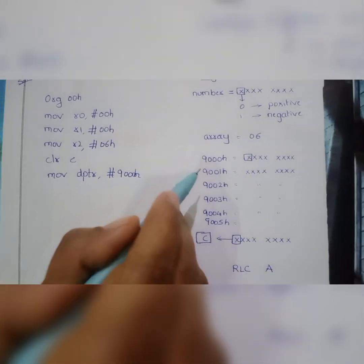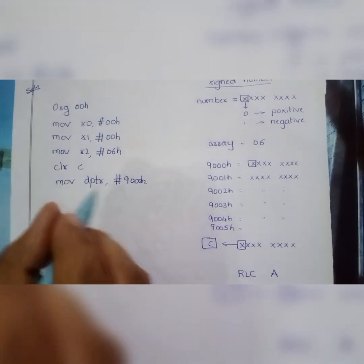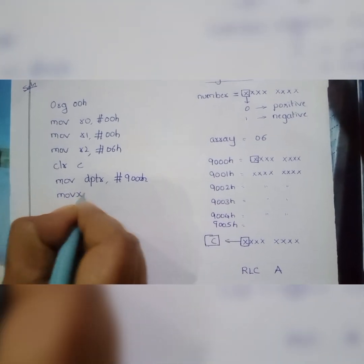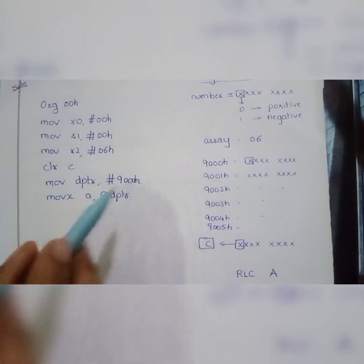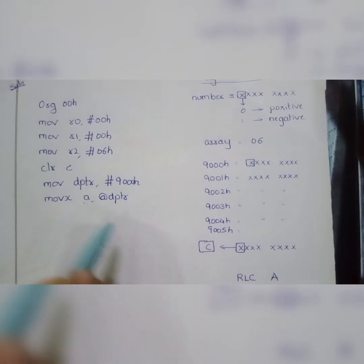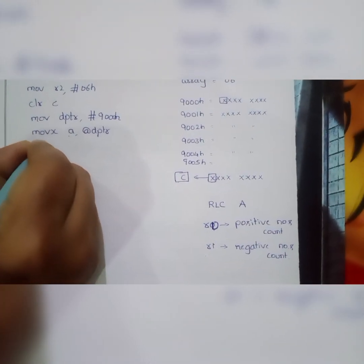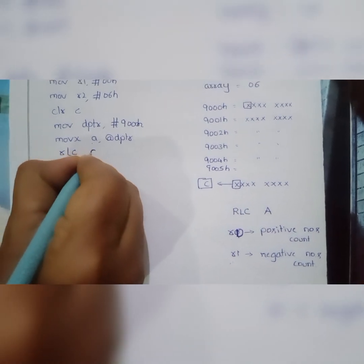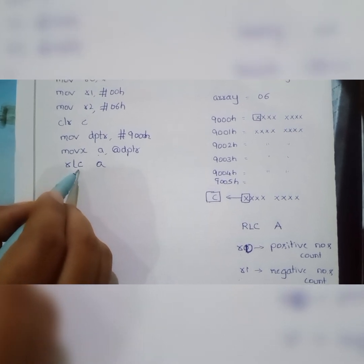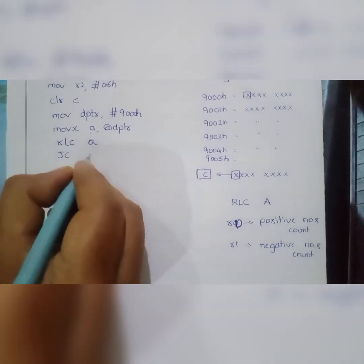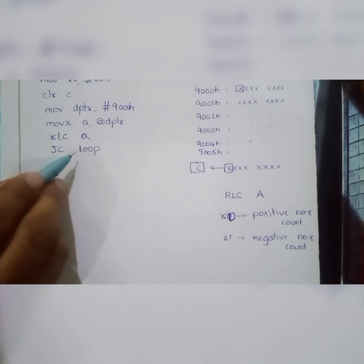We take the first data from memory location 9000H into the accumulator using MOVX A, @DPTR. The data from the first memory location is now in the accumulator. We rotate it left through carry using the RLCA instruction. Once this instruction executes, the most significant bit is now in the carry flag. We then check whether the carry flag is 0 or 1 using the JC instruction — jump if carry to a loop label.